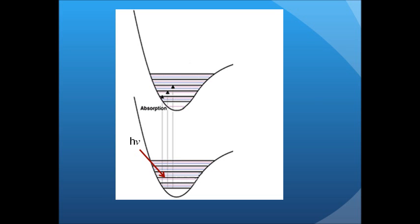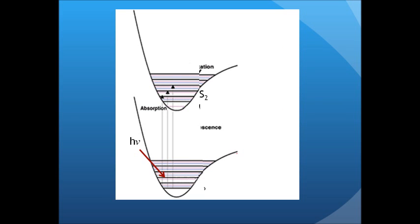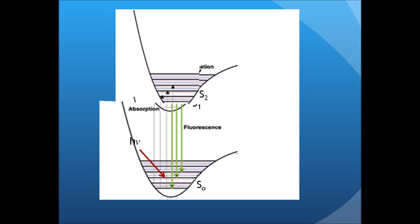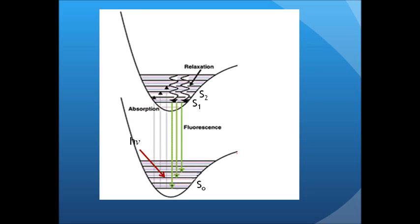The excited electron rapidly relaxes from high to low vibrational levels within the same singlet state. Then the electron relaxes to the ground state resulting in emission of photons.